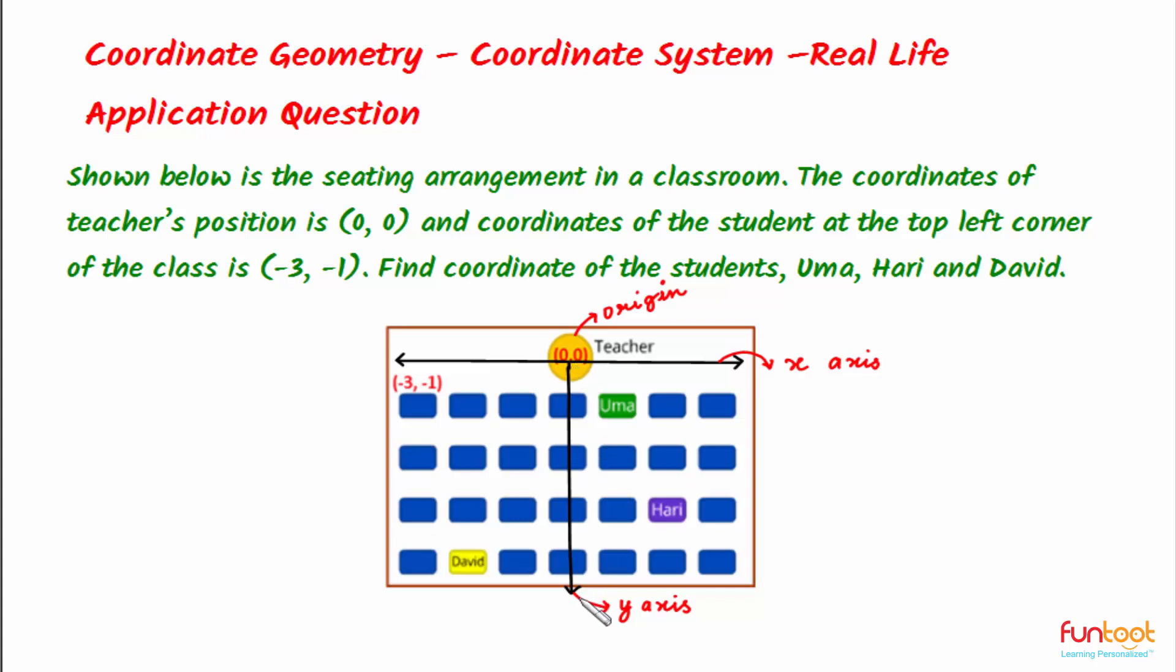All the students are arranged in the negative direction of the Y-axis. Students on the left side of the Y-axis are in the negative direction of the X-axis, and students on the right side are in the positive direction of the X-axis.